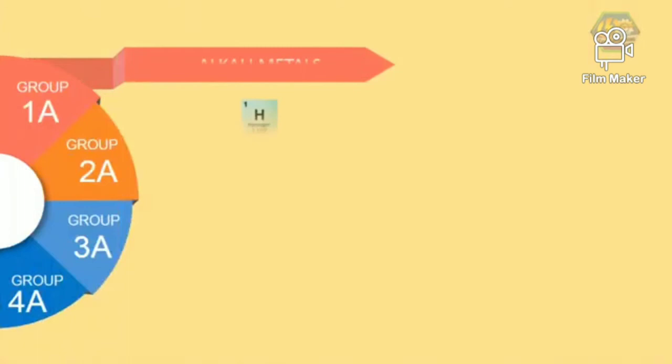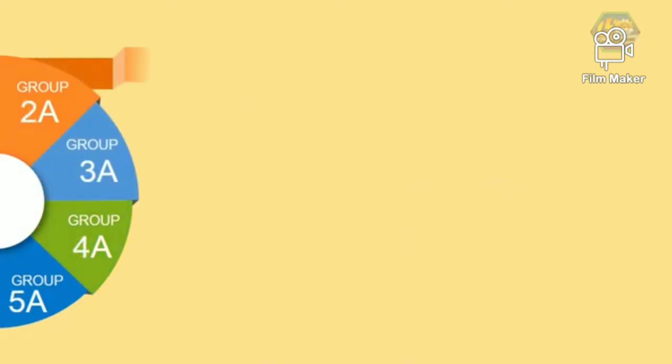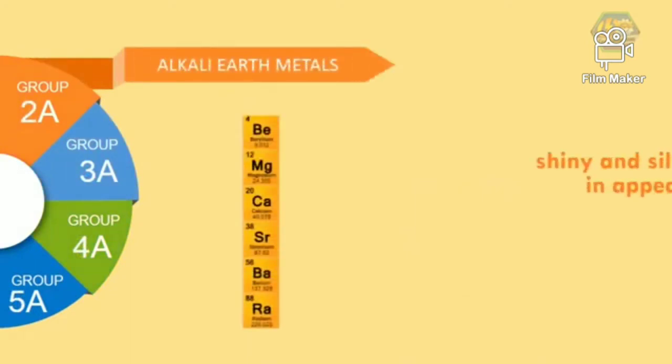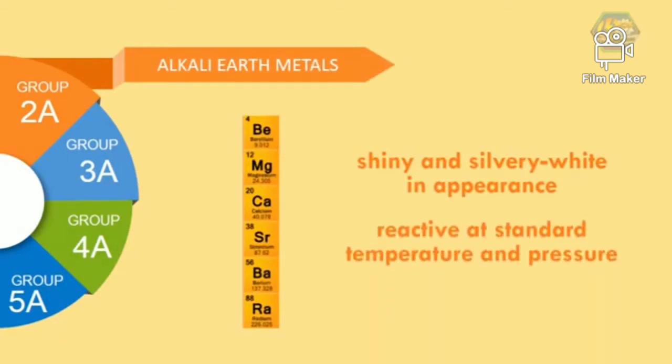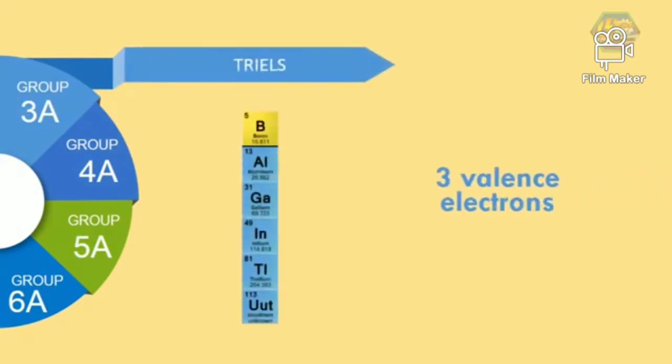Group 1A is called alkali metals which are very reactive and electropositive. Group 2A is called alkaline earth metals which are all shiny and silvery white in appearance and somewhat reactive metals at standard temperature and pressure. Group 3A is called triels which are characterized by having three valence electrons.